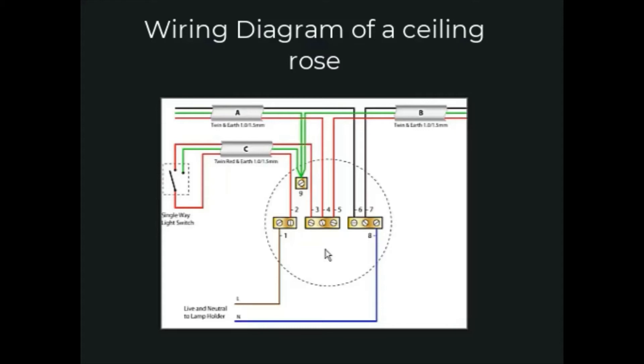If this is not possible to keep the ceiling rose in place, then you will have to use appropriate termination blocks and connect the wires in terminals 3, 4, and 5 together. All neutral wires go together in another terminal block and the wires in terminal 1 and 2 will go together.